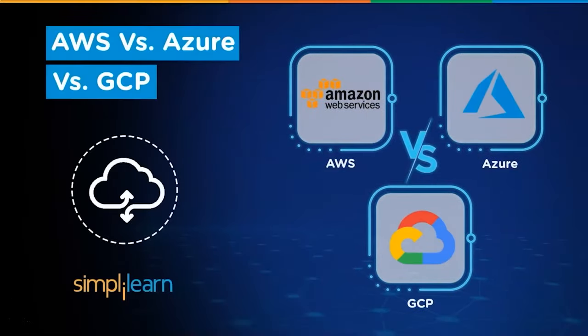In cloud computing, the competition for leadership is a quite tough three-way race. Amazon Web Services, Microsoft Azure, and Google Cloud Platform clearly are the top cloud companies who have a commanding lead in the infrastructure-as-a-service and platform-as-a-service markets. Hey everyone, I'm Lance, and I want to welcome you all to this new video from Simply Learn on AWS versus Azure versus GCP.